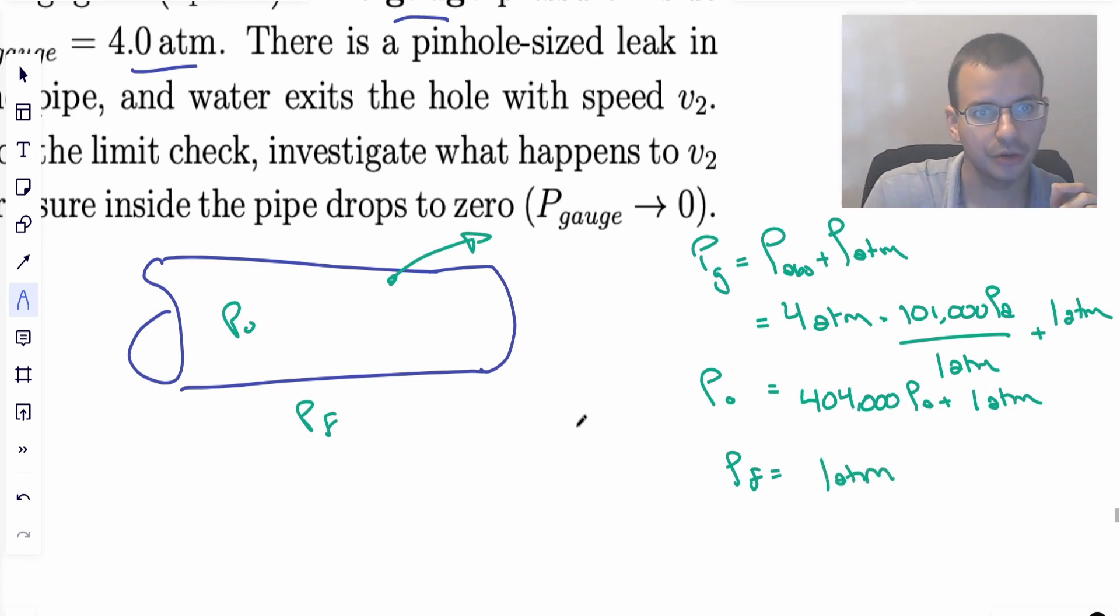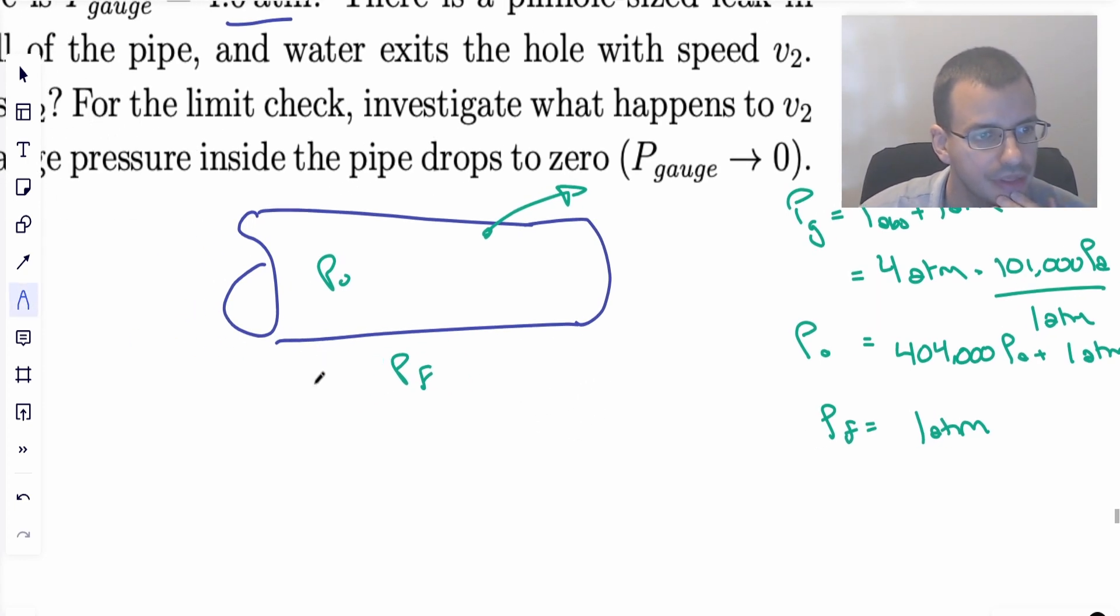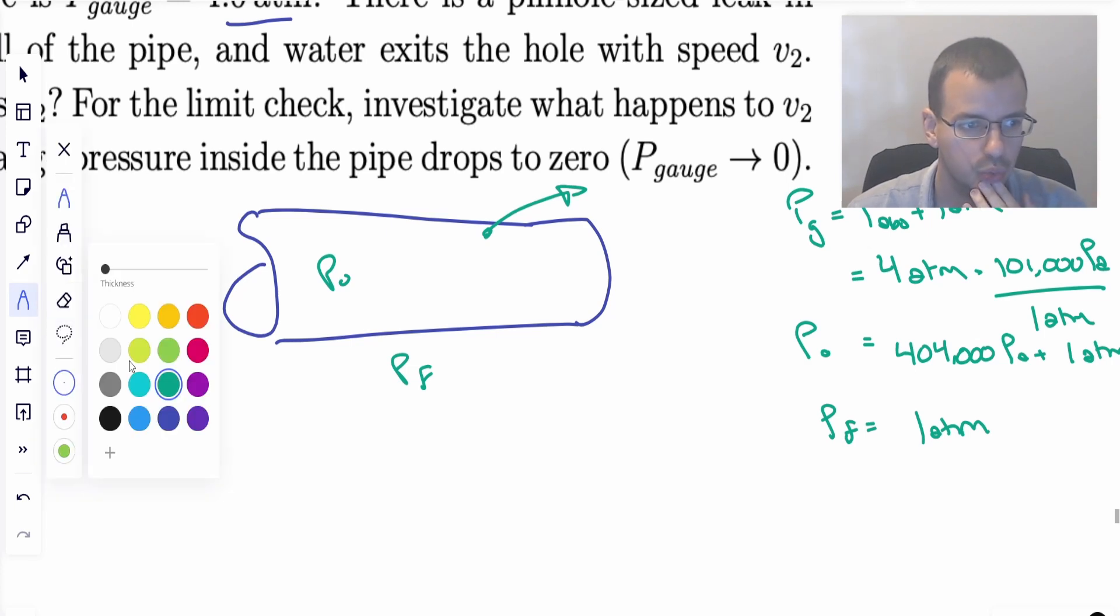So you can kind of sort of ignore pressure gauge and just work with it. I'd recommend not. It's good to convert gauge to absolute every time. You just make fewer mistakes. This is a pretty straightforward problem, but there's enough nuance in these kinds of problems that it's worth understanding and going through as many details as you can.